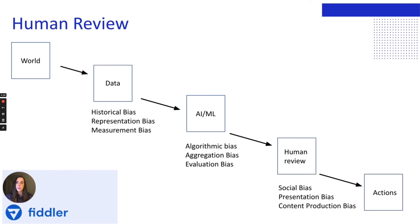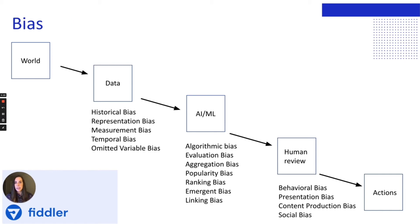Human review. Lastly, even if your model is making correct predictions, the human reviewer can introduce their own biases at the final step. An example of this might be where a human reviewer overrules a correct model prediction based on their own societal bias, saying something to the effect of: 'I know that demographic, and they never perform well.' These are just a few examples of bias — our list is not meant to be comprehensive, and we recommend that you practice your own due diligence when creating your systems.